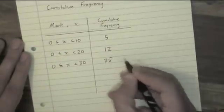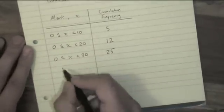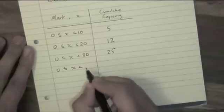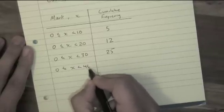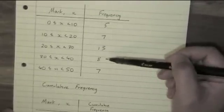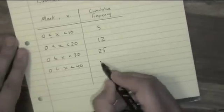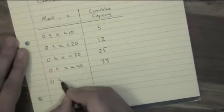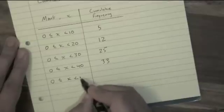Next one, the number of people who scored between 0 and 40. This is going to be the first four rows from my table, so I can just add on eight more, and I get 33.